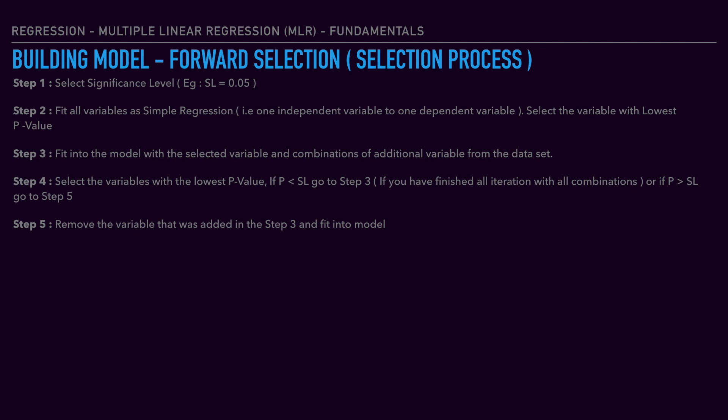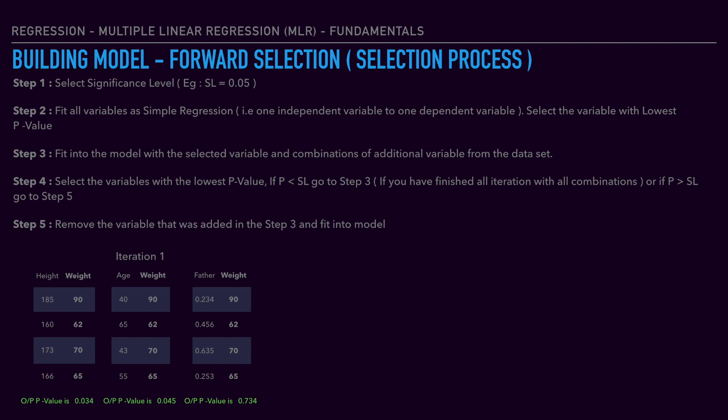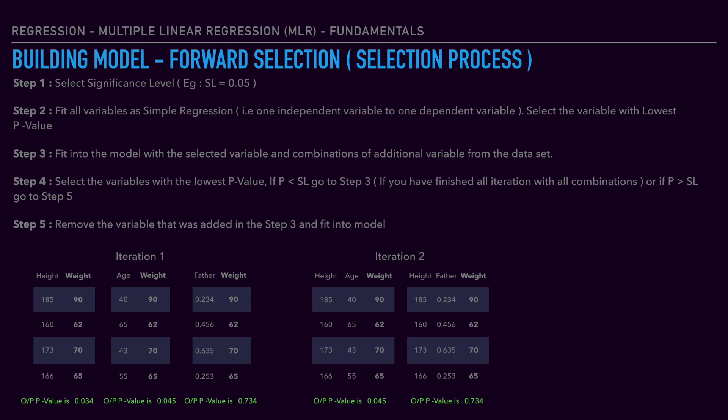As an example, consider a dataset with three independent variables — height, age, and father — and one dependent variable, weight. Step 1: select the significance level as 0.05. Step 2: fit all variables as simple linear regression, one-to-one mapping — height vs. weight, age vs. weight, father vs. weight. We build three separate models and check the p-value for each.